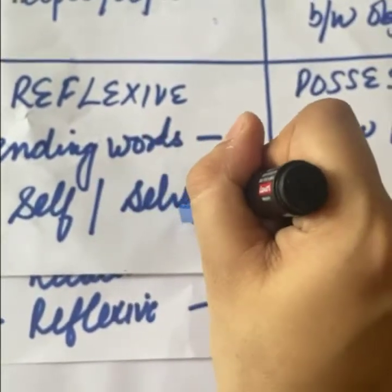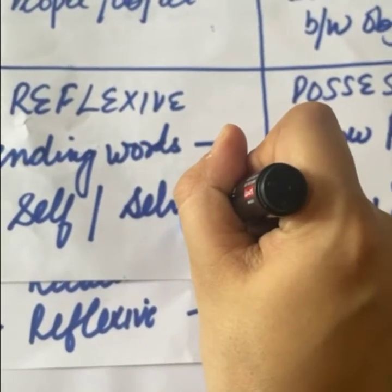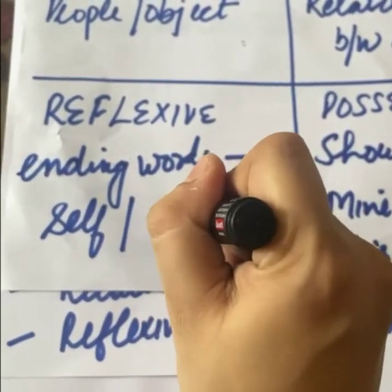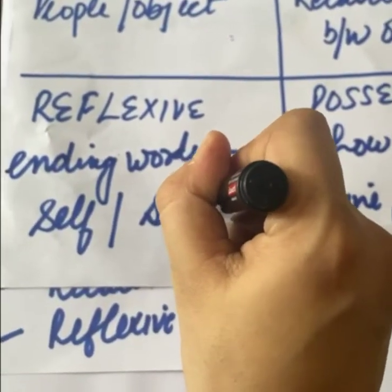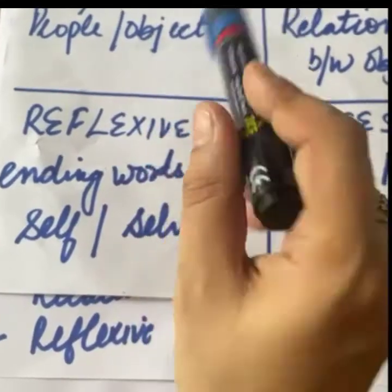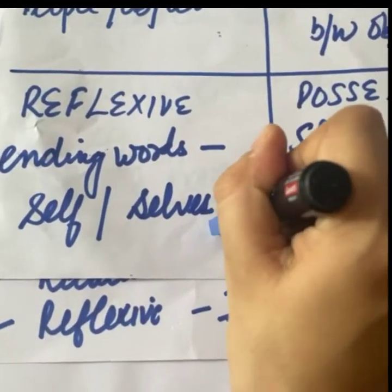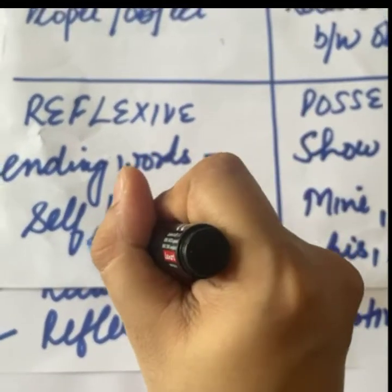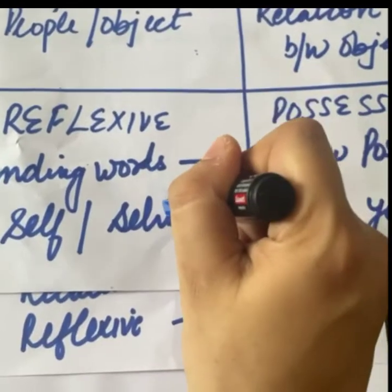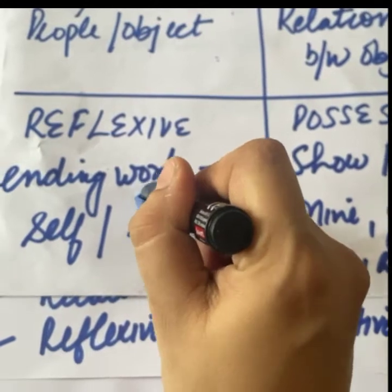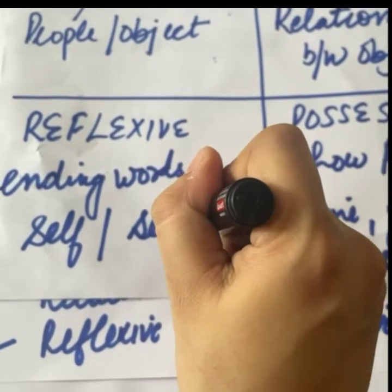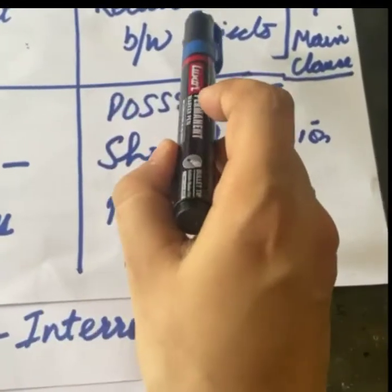Reflexive pronouns woh hote hain jo 'self' ya 'selves' ke saath end karte hain — jaise himself, herself, ourselves, yourselves.